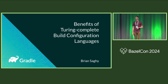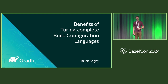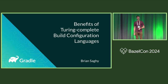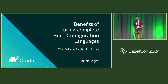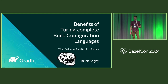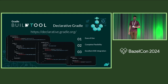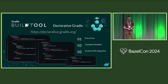I am here to tell you about the benefits of a Turing-complete build configuration language and why it is time for Bazel to finally ditch Starlark. Just kidding, of course. As a matter of fact, the Gradle build tool team is exploring supporting its own declarative DSL configuration language that it's calling Declarative Gradle.